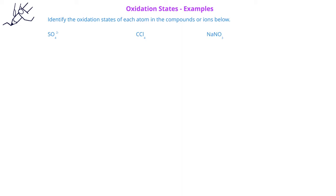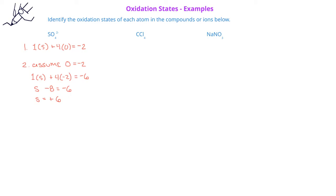Let's look at a few examples of identifying the oxidation states of atoms in compounds. In the first example, we have the sulfate ion, SO4²⁻, with a two minus charge. We know that the sum of the oxidation states of the one sulfur plus the four oxygens must equal negative two. Assuming oxygen is minus two, the sulfur plus four times negative two must equal negative two, so the sulfur must have an oxidation state of plus six.